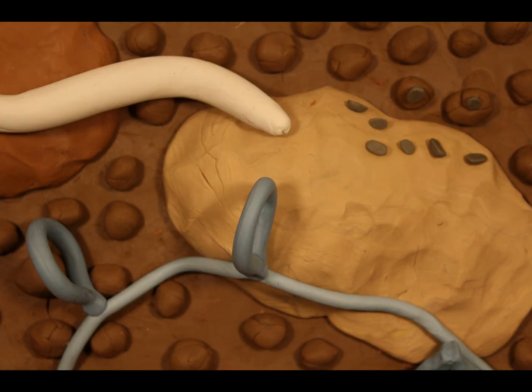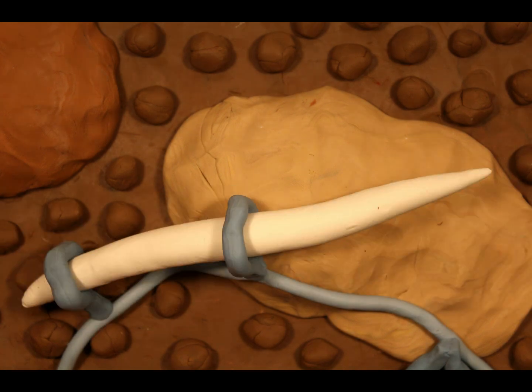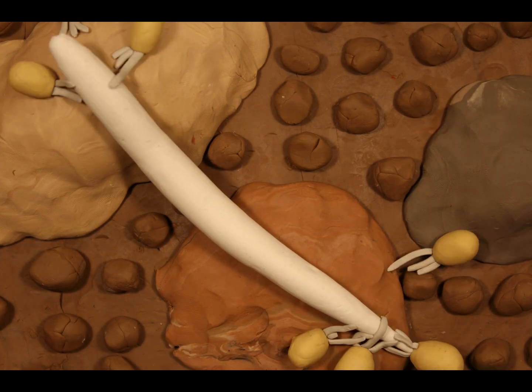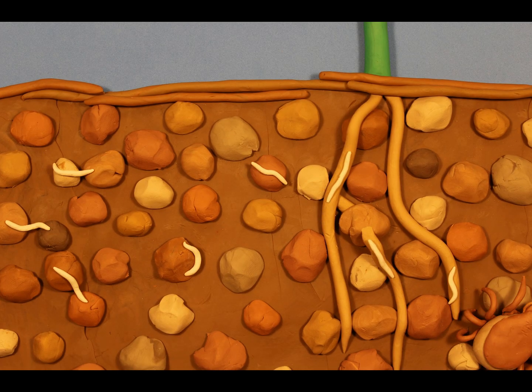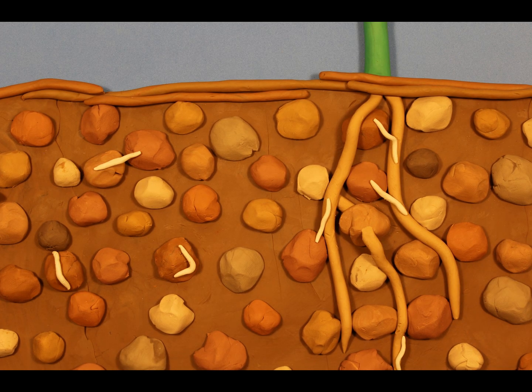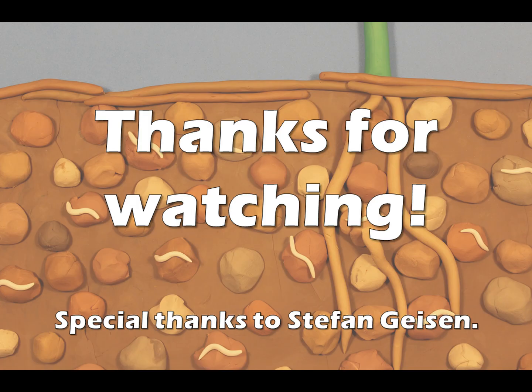Even microbes, from bacterial pathogens, to snare-setting fungi, and pack-hunting protists also get in line for the nematode buffet. That they remain the most abundant animal group on Earth despite these many enemies is a testament to nematodes' mastery of life and soil.